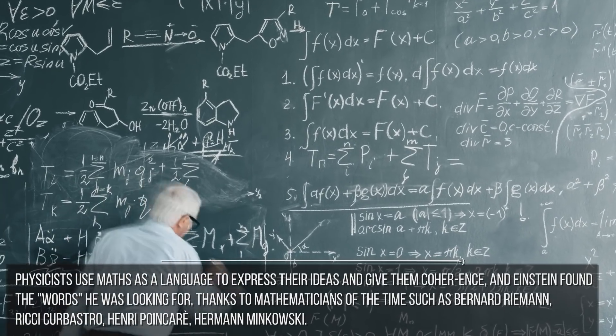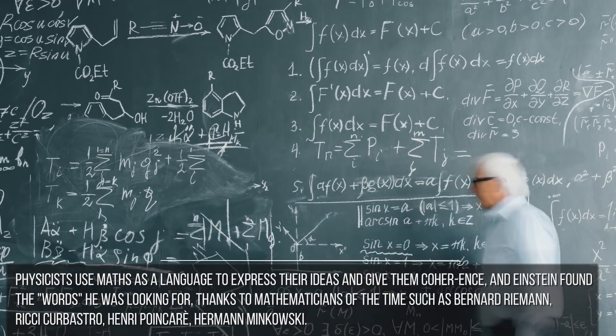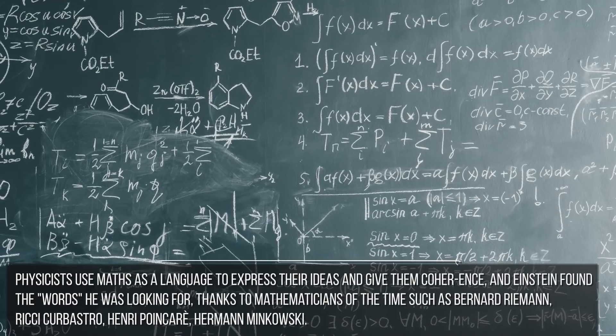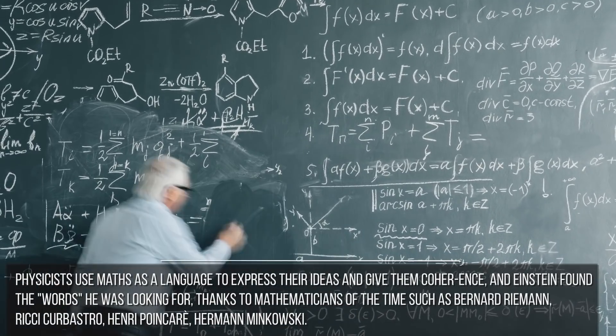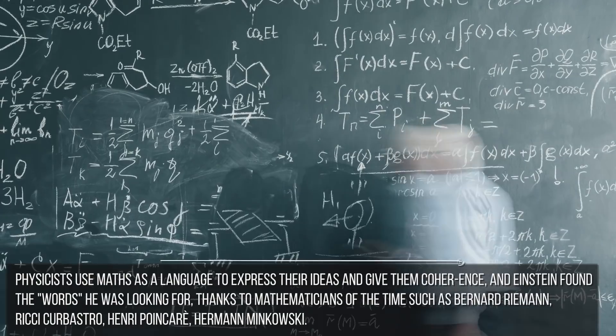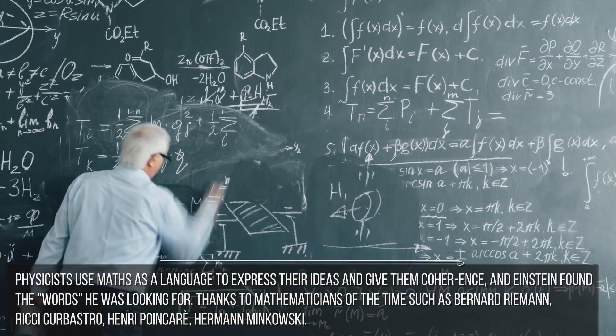Thanks to mathematicians of the time such as Bernard Reimann, Ricky Corbostro, Henri Poincaré, and Hermann Minnikowski, these men had developed in their work the tools that Einstein used afterwards to write the theory of relativity.